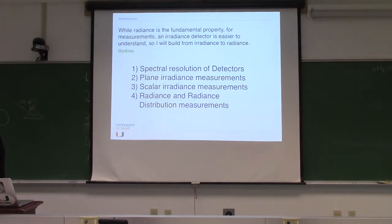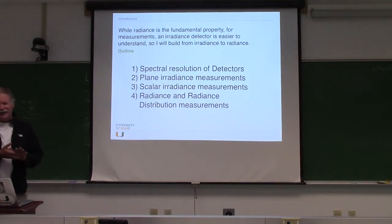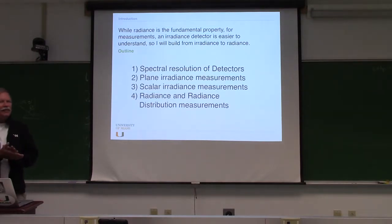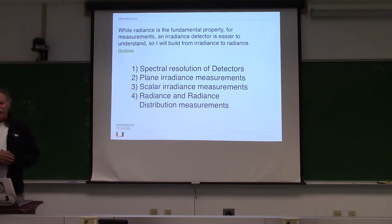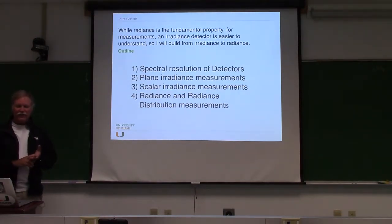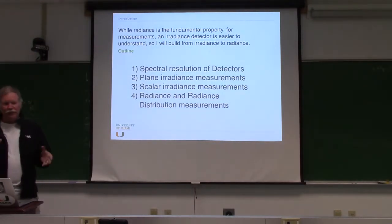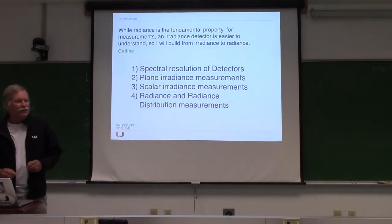While radiance is really the fundamental property, you can get everything from the irradiance distribution. A detector is easier to understand, so I'm going to start at irradiance and go to radiance from that way. First we'll talk about spectral resolution of detectors, then plane irradiance, scalar irradiance, and then radiance and radiance distribution measurements. At the end I'll do a little bit about atmospheric measurements.